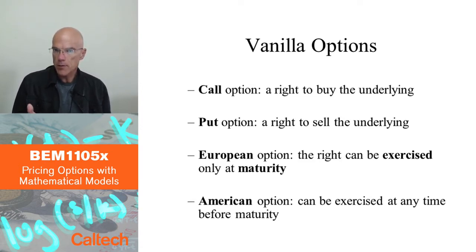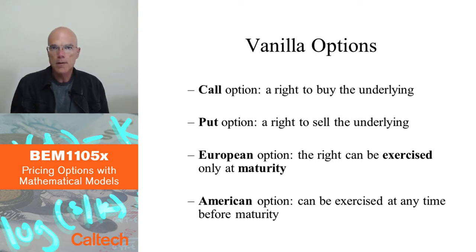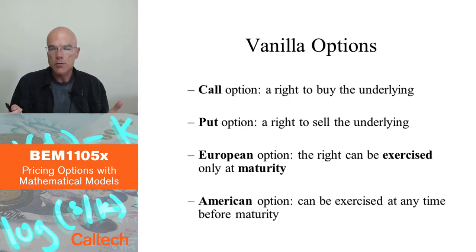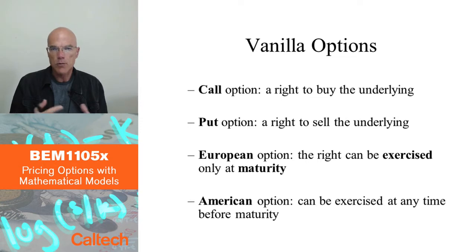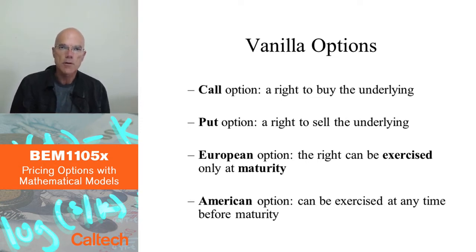They are pretty much similar to the forward contract, with the call option being on the long side and the put option being on the short side. Except in the forward contract, you have to buy the underlying at the end if you are long, or deliver it if you are short. With the option, you have the option to do that and you don't have to if it's not good for you. So a call option is the right to buy the underlying asset, and a put option is the right to sell the underlying asset — the most natural things to have.